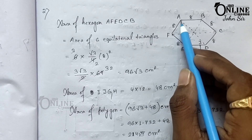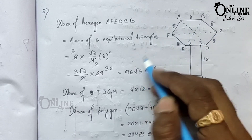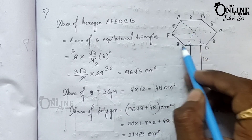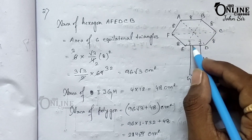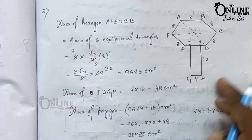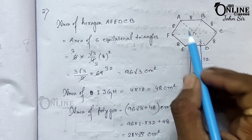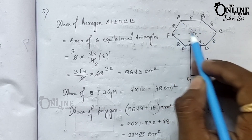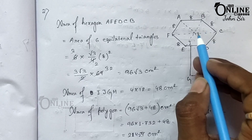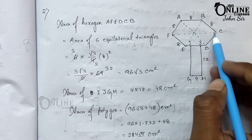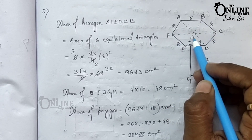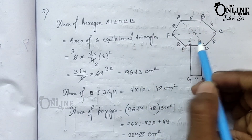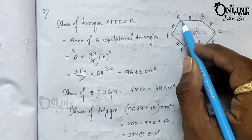The second diagram shows hexagon ABCDEF, where all sides equal 8 centimeters, and rectangle IJGH. First find the area of the hexagon, then the area of the rectangle, then add them. You can divide the hexagon into 6 equilateral triangles, since all sides are equal. With center O, the triangles are AOB, BOC, COD, DOE, EOF, and FOA.